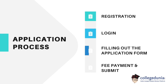The application process for GATE is basically divided into four major divisions: number one is registration, number two is logging in, number three is filling out the application form, and finally, fee payment.